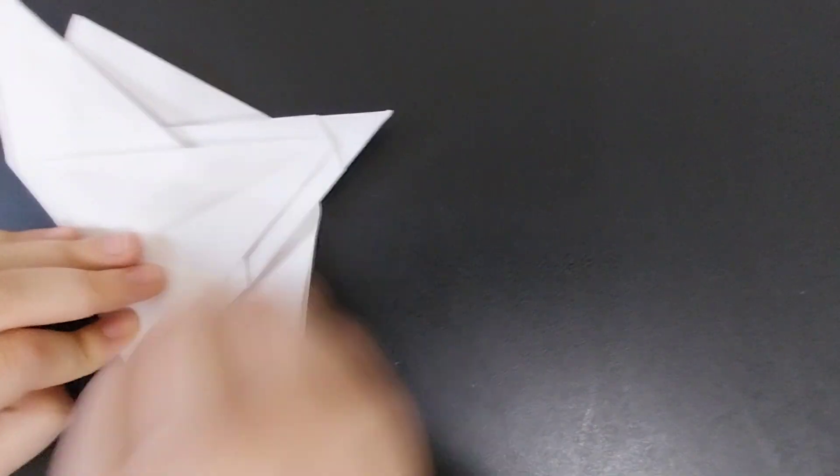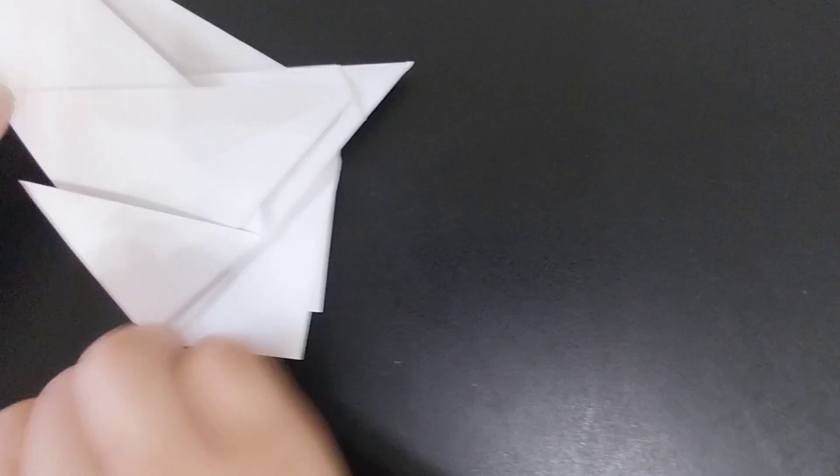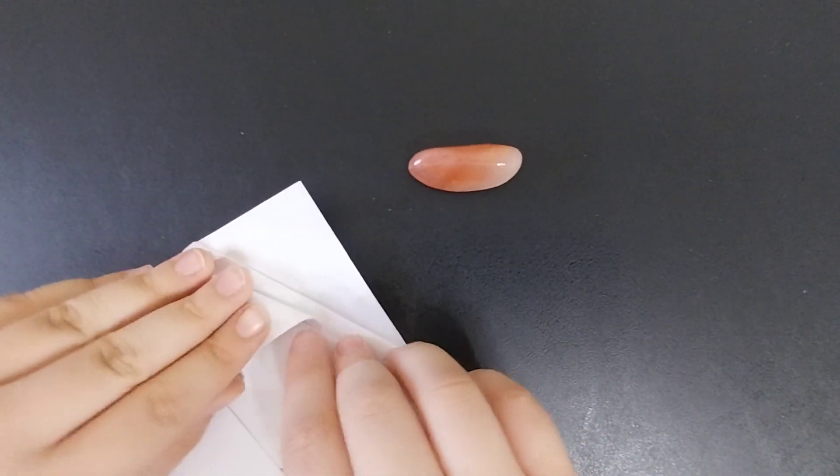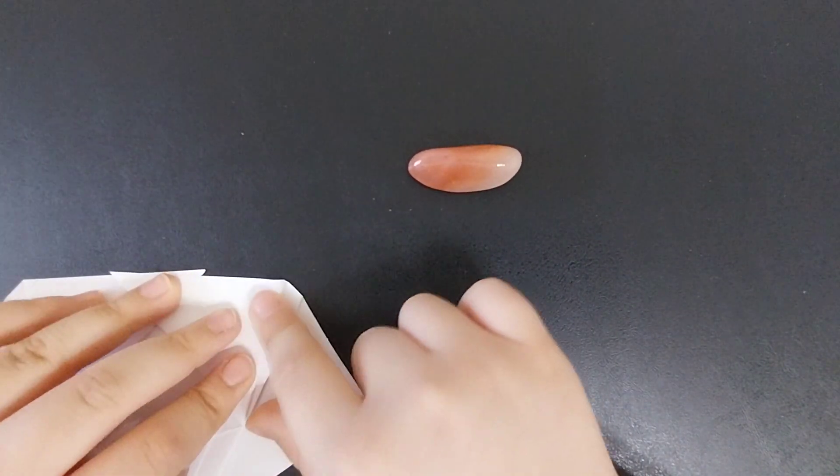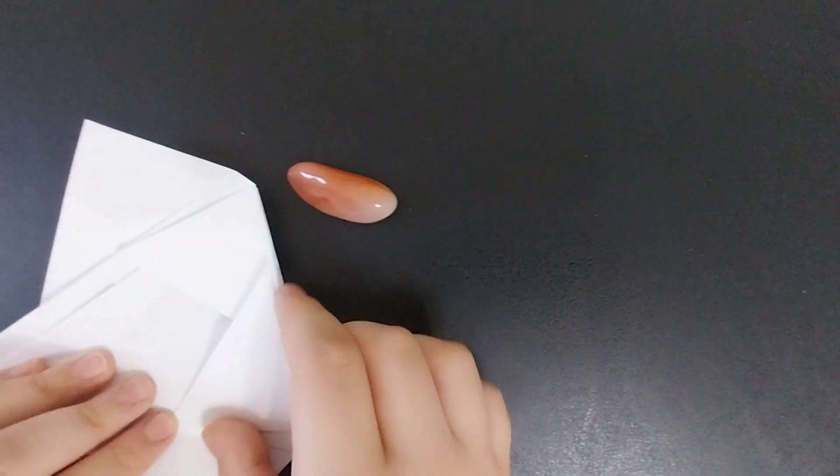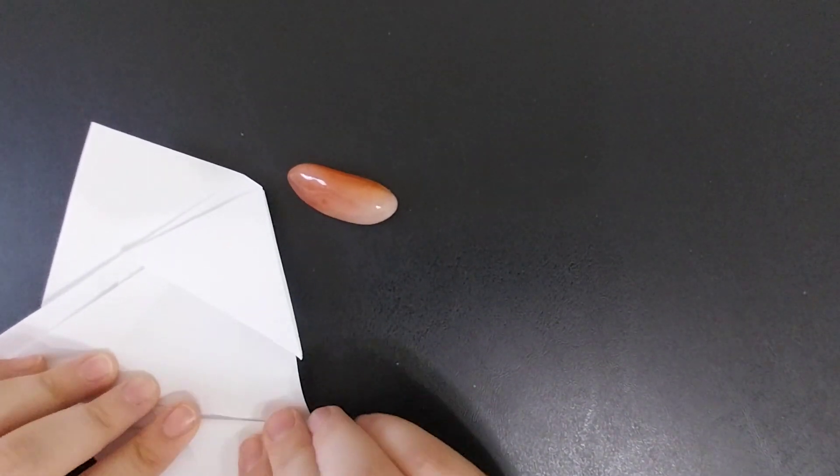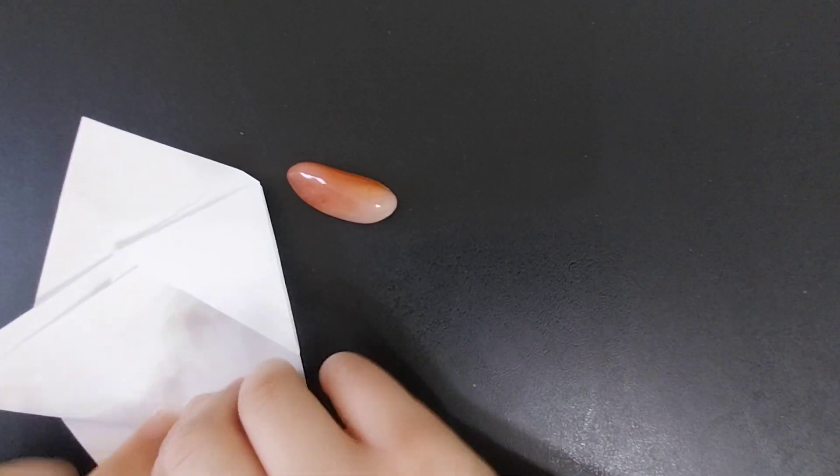Make sure you crease it pretty well. Repeat on the other side. Next, you can fold the tail fin out from that intersection.